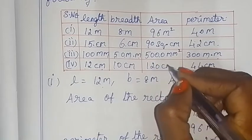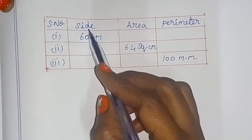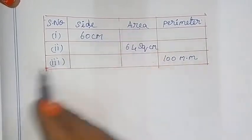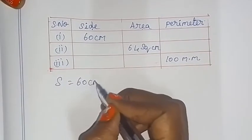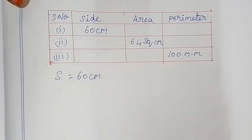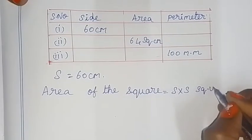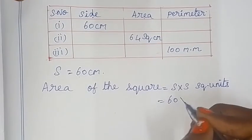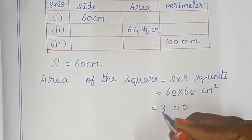Now in the table column for squares, we have to write the side and perimeter. The side is equal to 60 cm. Area of the square = side × side square units = 60 × 60. So 6 × 6 = 36, giving 3600 cm².